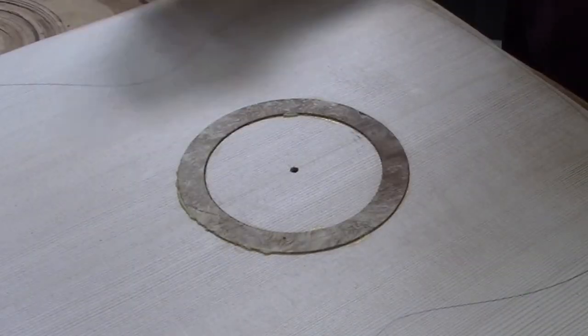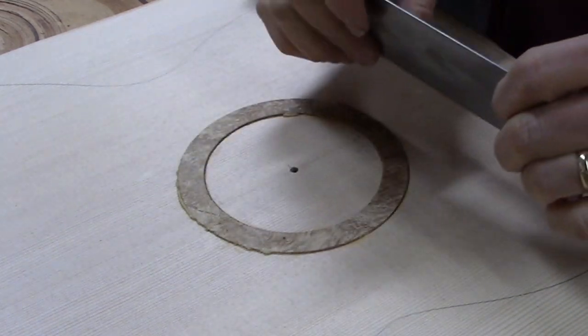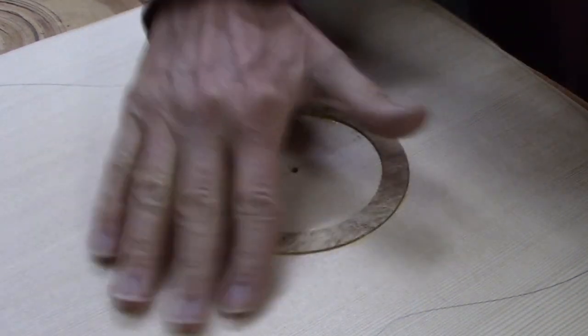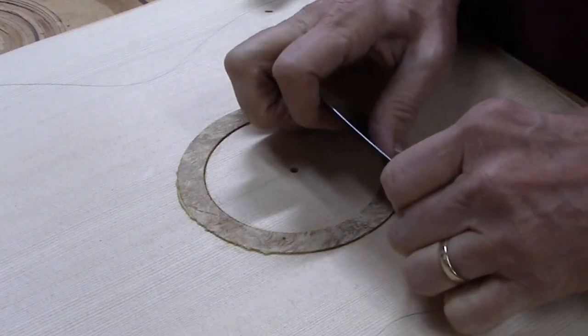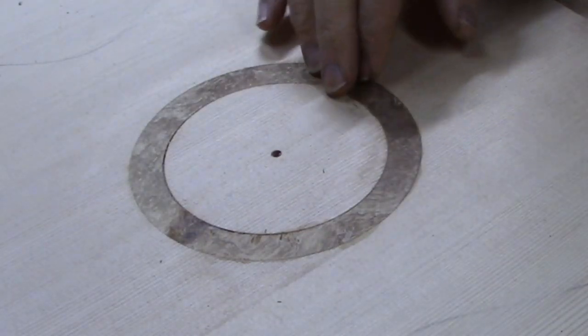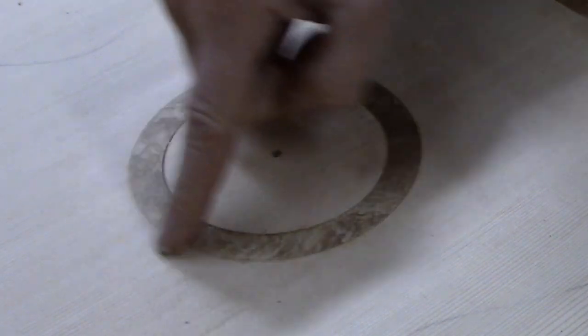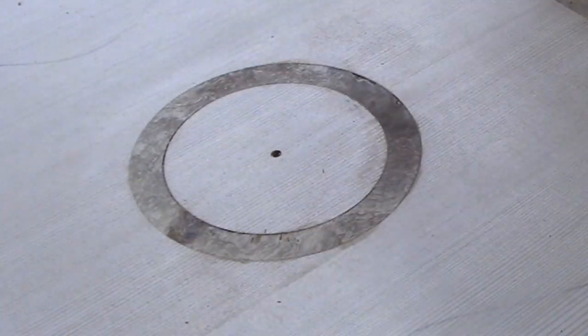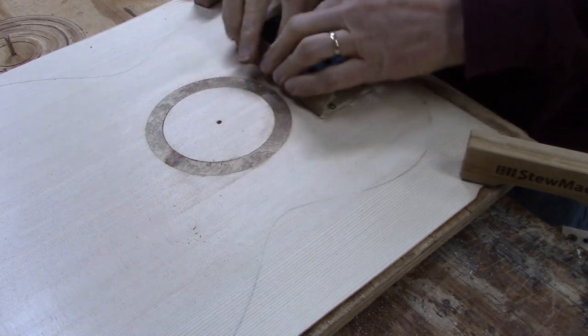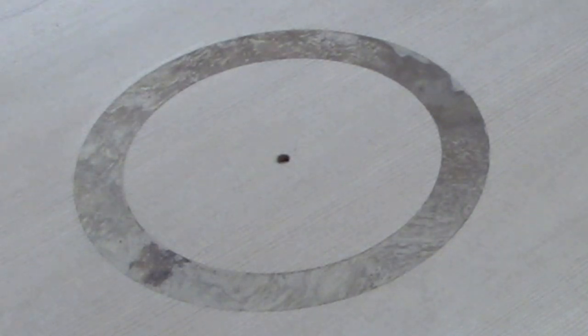So now that the glue is dry on this ring, I'm going to use a scraper blade and scrape the whole ring flush with the surface of the soundboard. Okay, I'm almost there, so now I'm going to sand the last little bit so that I don't accidentally tear some of the grain in the spruce. Okay, that's it for now.